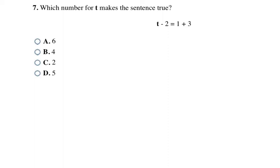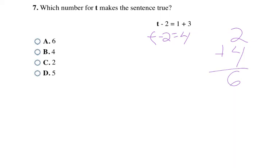This problem also has a few more numbers, but just like before, I can go ahead and do the addition first. 1 plus 3 is 4, and then the rest of the equation stays the same. Using opposite operations: 2 plus 4 is 6. Checking: 6 minus 2 is 4, so both sides are 4 — it checks out. Choice A is my final answer.